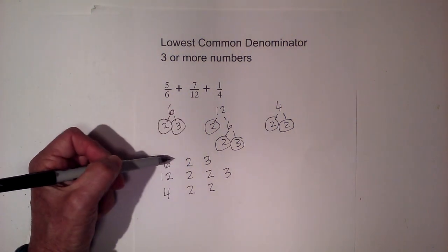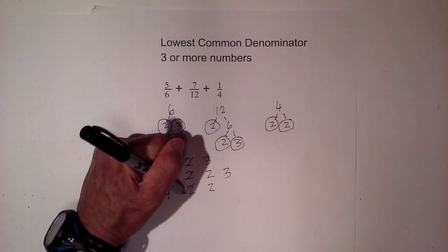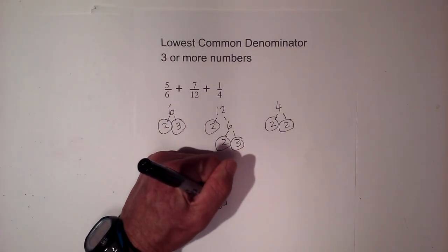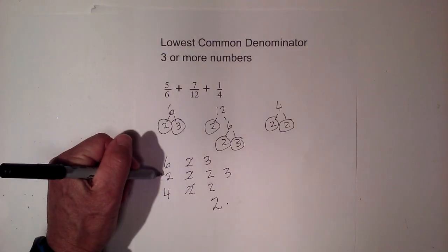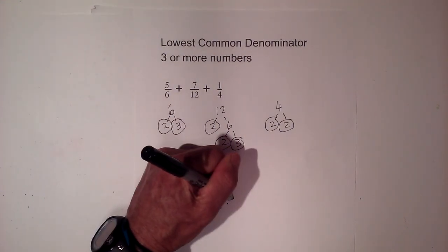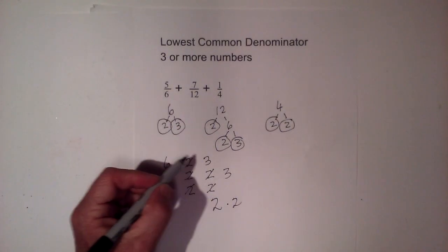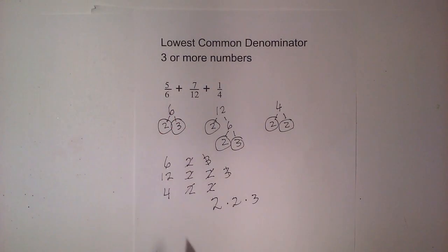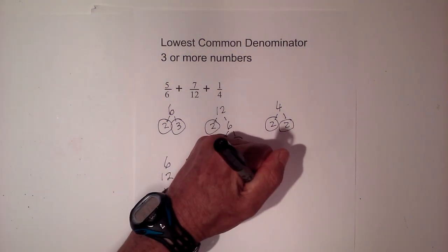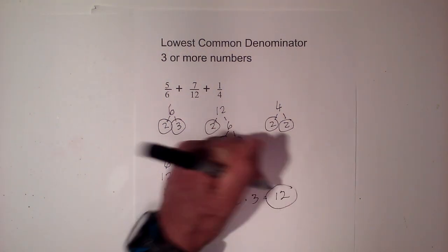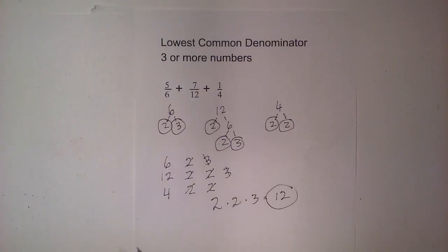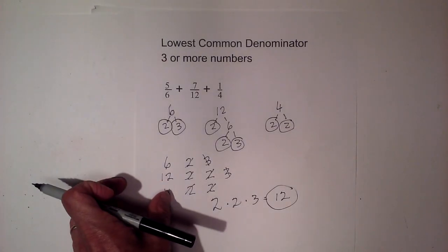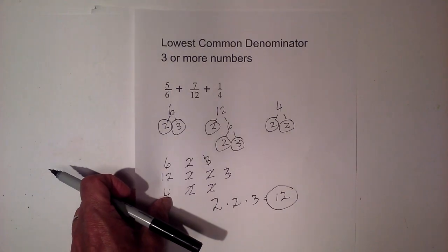2 appears in 6, 12 and 4 so I'm going to cross each of these out and only multiply it once. Again we have a 2 and it's in 2 of the numbers so I'm only going to use it once. And then we have a 3 in 6 and 12 so I'm only going to use it once. So now I have all the numbers crossed out and I'm going to multiply these prime numbers together. 2 times 2 is 4 and 4 times 3 is 12. So 12 is the lowest common denominator. And that one is a very basic one. I will get a little more challenging problems as I move on.